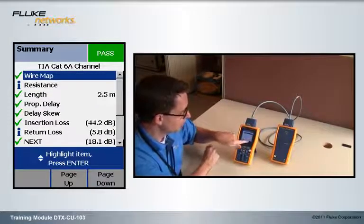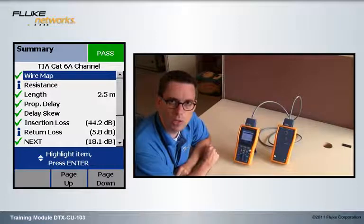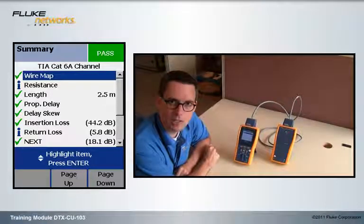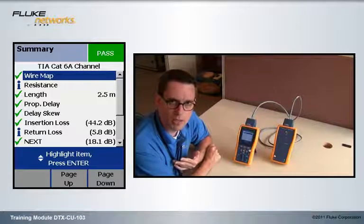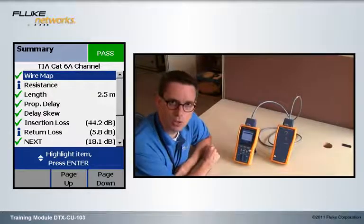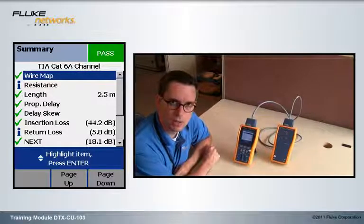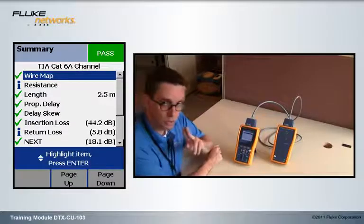And when we look at the result, we see that the near end crosstalk margin is 18.1 dB worst case, which is suspiciously high. Typically with patch cords, we're talking single-digit numbers.